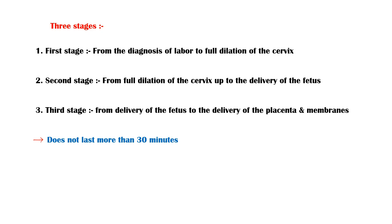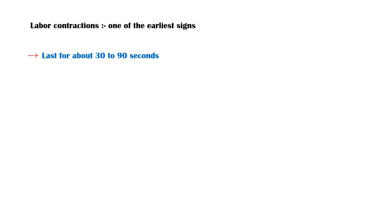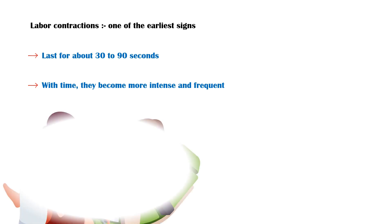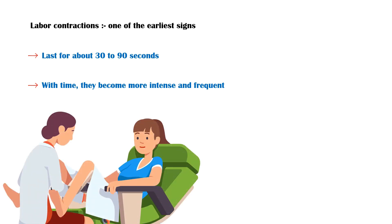One of the earliest signs of labor is labor contractions. Usually they last for about 30 to 90 seconds, and with time they become more intense and more frequent. At this time, the midwife or a doctor will perform a vaginal examination and confirm labor.